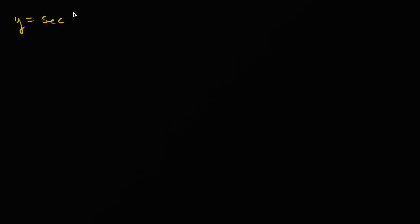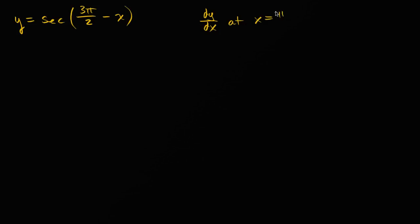Let's say that we have y is equal to the secant of three pi over two minus x. What we want to do is figure out what dy/dx is — the derivative of y with respect to x — at x equal pi over four. Pause this video and see if you could figure it out.